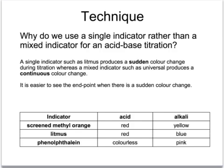We use single indicators rather than mixed indicators like universal indicator so that they have a single colour change at neutralisation. Some examples of these single indicators are screened methyl orange which is red in acid and yellow in alkali